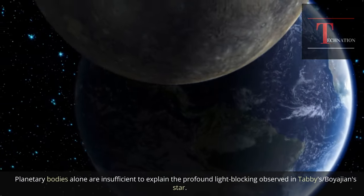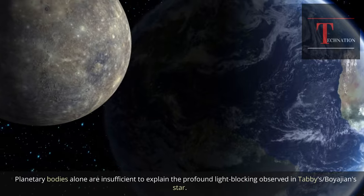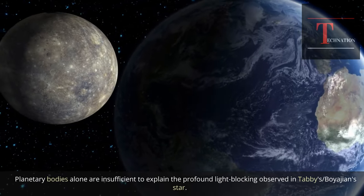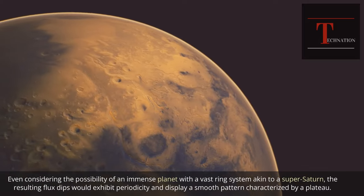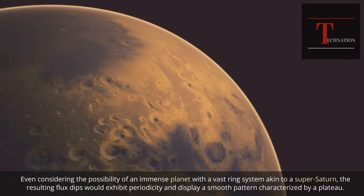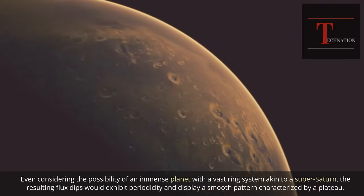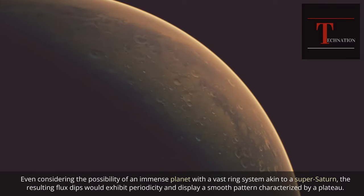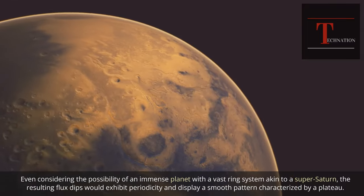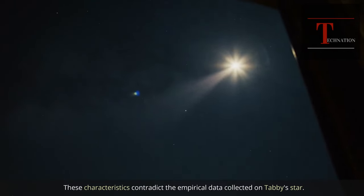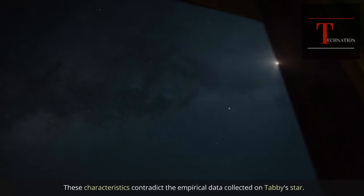Planetary bodies alone are insufficient to explain the profound light blocking observed in Tabby's Boyajian star. Even considering the possibility of an immense planet with a vast ring system akin to a super Saturn, the resulting flux dips would exhibit periodicity and display a smooth pattern characterized by a plateau. These characteristics contradict the empirical data collected on Tabby's star.